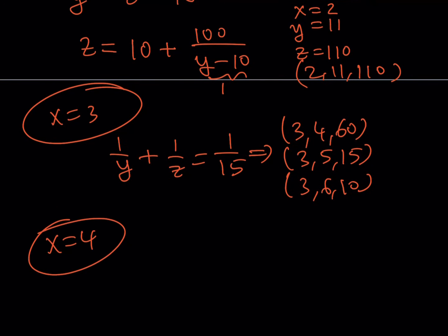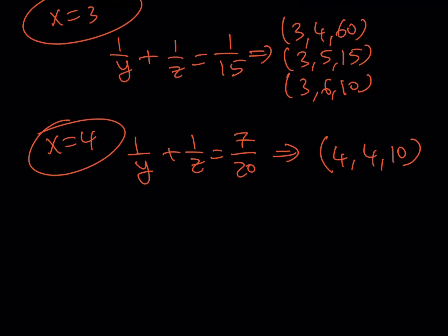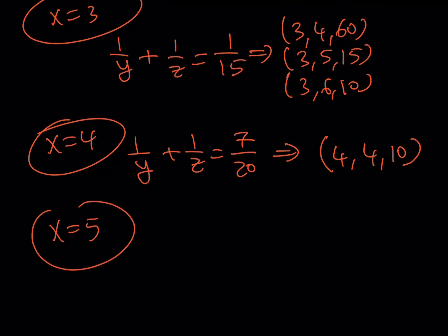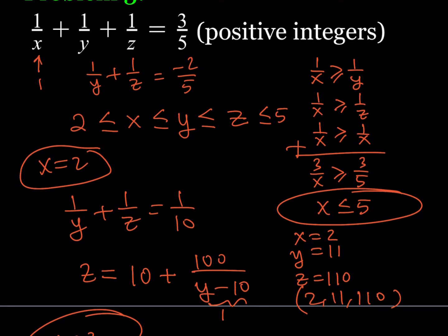If x = 4: you get 1/y + 1/z = 7/20. From here we get only one solution, which is interesting because x and y are both equal to 4. Finally, if x = 5: 1/y + 1/z = 2/5, giving y = z = 5. So (5, 5, 5) is a solution, which makes sense since 1/5 + 1/5 + 1/5 = 3/5.